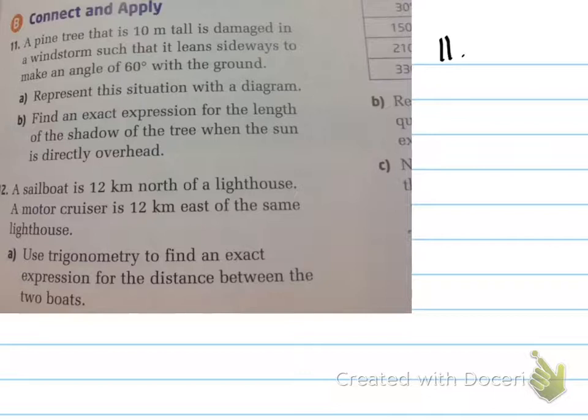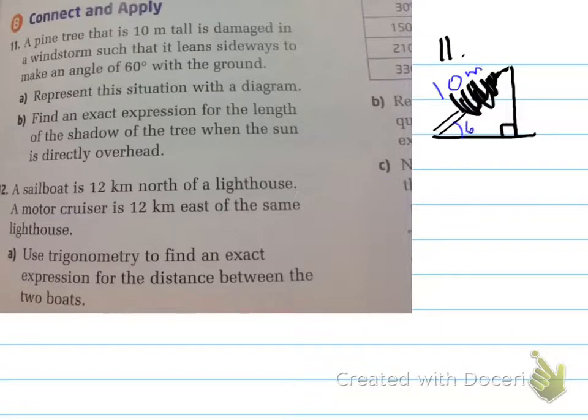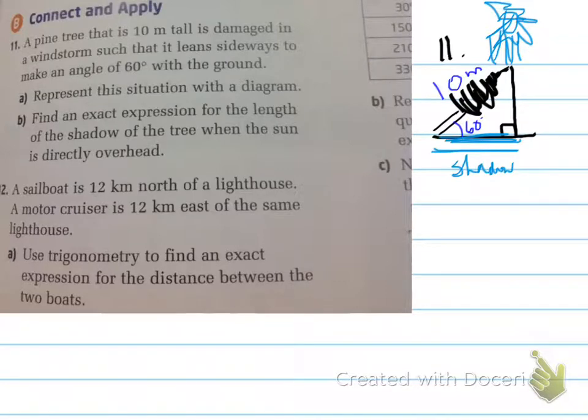Question number 11. A pine tree that is 10 meters tall is damaged in a windstorm such that it leans sideways to make an angle of 60 degrees with the ground. Represent the situation with a diagram. So we have a diagram here, 60 degrees, 10 meters. And then what it asks is find an exact expression for the length of the shadow of the tree when the sun is directly overhead.